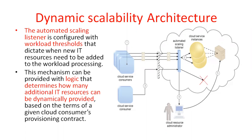Based on the threshold value, you are adding new IT resources. This mechanism can be provided with logic — that logic determines how many additional resources can be dynamically provided. The automated scaling listener has a threshold value, and based on that threshold value, how many IT resources can be dynamically provided is determined based on the terms of a given cloud consumer's provisioning contract.